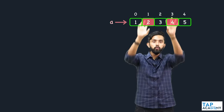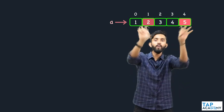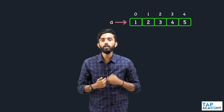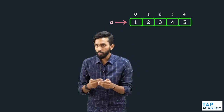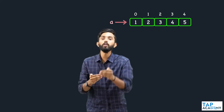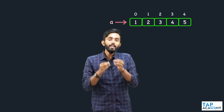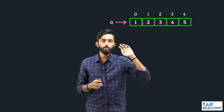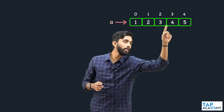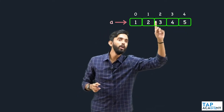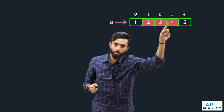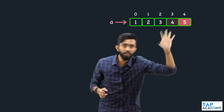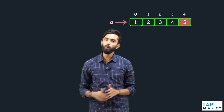Now, is 2 and then 4 a sub array? Is 2 and 5 a sub array? No — because arrays by nature are contiguous. Contiguous means one after the other, one next to the other. A sub array is also a contiguous series of elements. You cannot have dispersed elements. So 2 3 is a sub array, 2 3 4 is a sub array, 2 3 4 5 is a sub array. It should be contiguous.